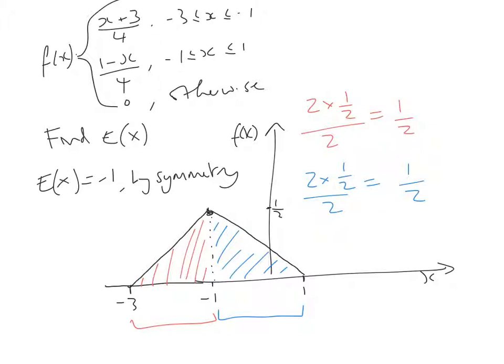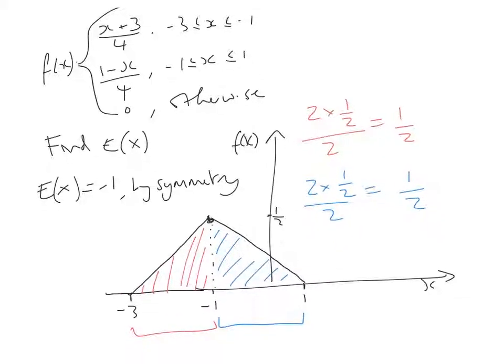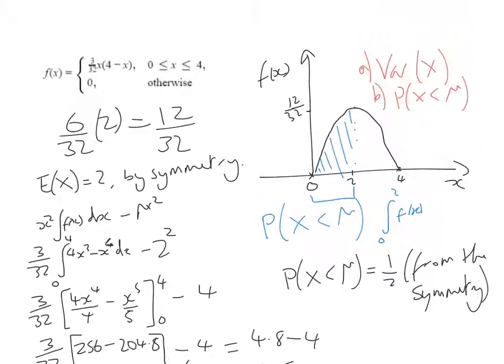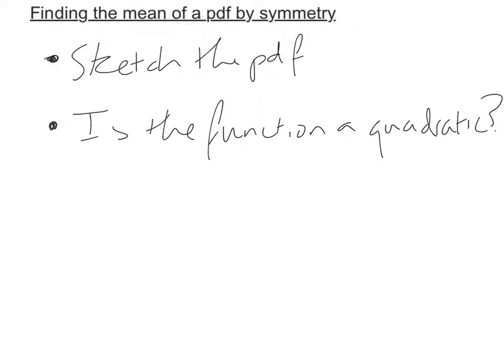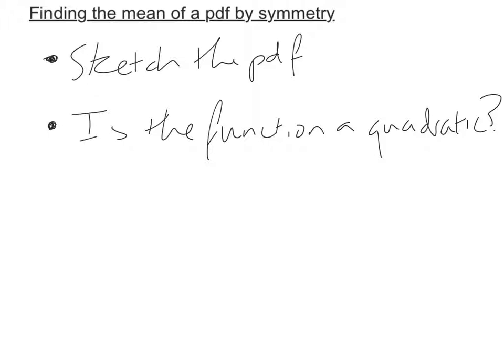So where possible, try and find the expectation of x by using symmetry because it's much easier than having to integrate it. And you're much less likely to make a mistake as well. And the top tips for that are sketching the PDF, firstly. And also a good tip to look out for is, is the function a quadratic? More often than not, you'll get a symmetrical PDF. However, you have to be careful with ones such as this.